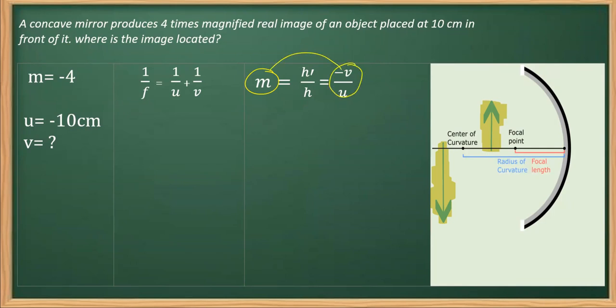It's very simple. Once again writing, m is equal to minus v over u. m which is minus 4 in this case, and v is what we have to get, and u is the minus 10 which is given here.